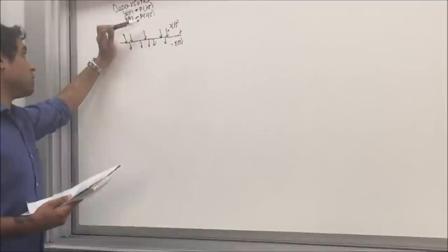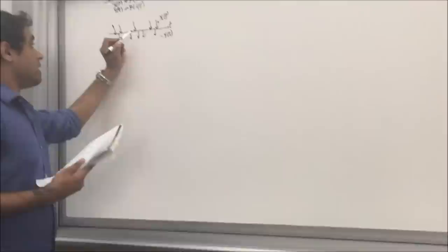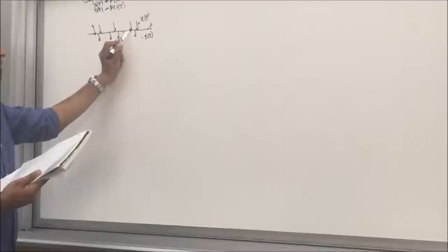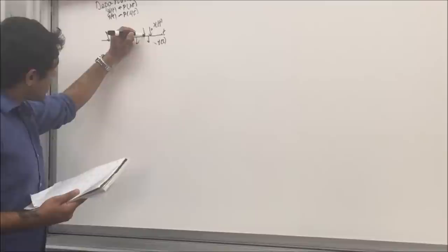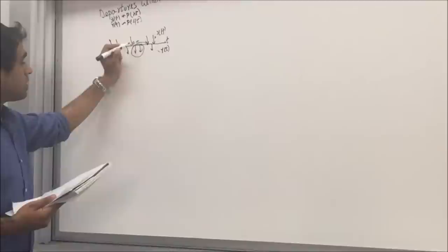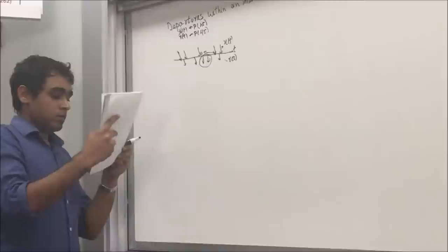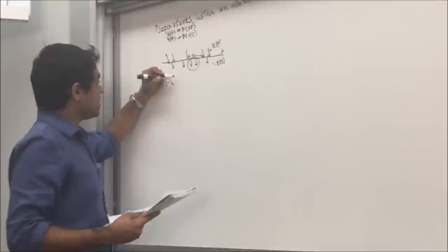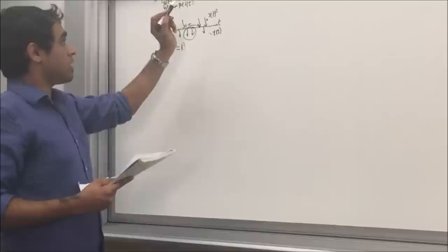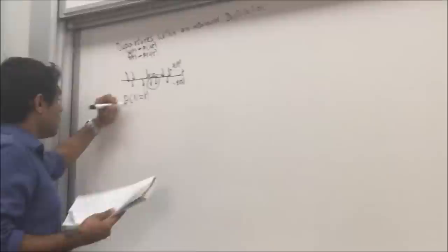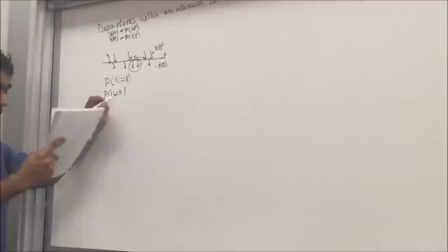We need to find the density function of the departures between two arrivals. If this inter-arrival time is denoted by tau, then we need to find the number of departures in this time interval. We have to find the probability that the number of departures equals k, where k is the number of departures. We know P(N=k | Z=tau), where tau is this time interval.